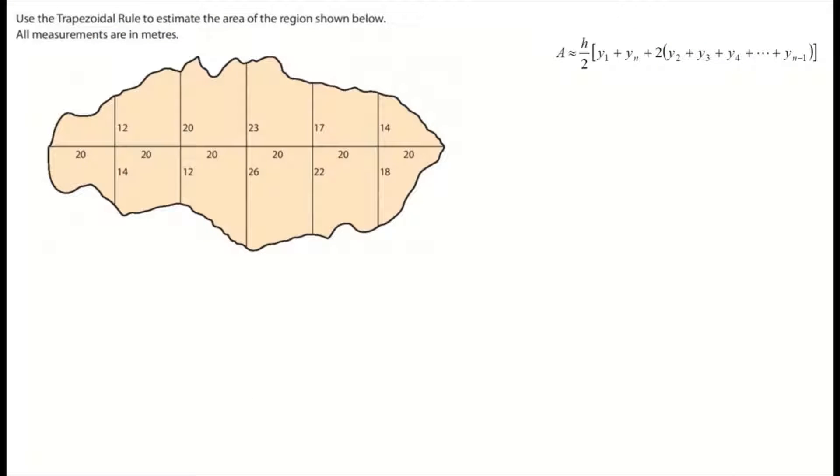Use the trapezoidal rule to estimate the area of the region shown below. All measurements are in meters. So we just need to first figure out our H. The H is the gap between the bar or the interval. That's our 20 here, so that's going to stand for our H.